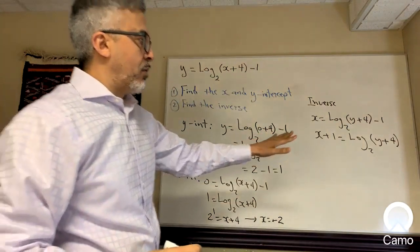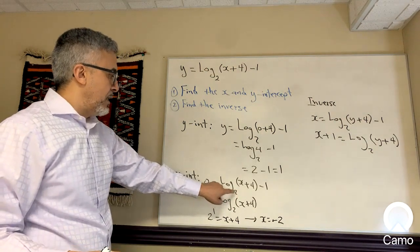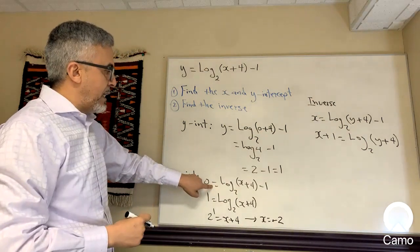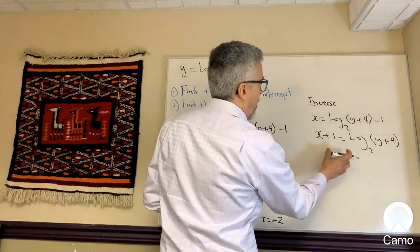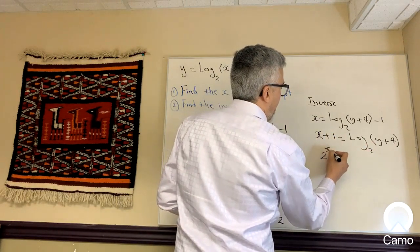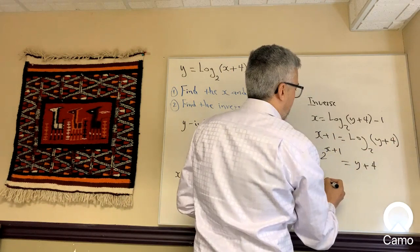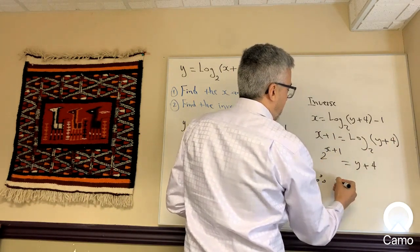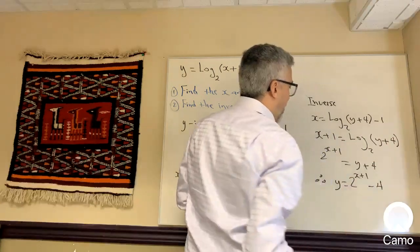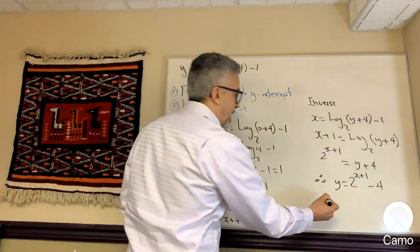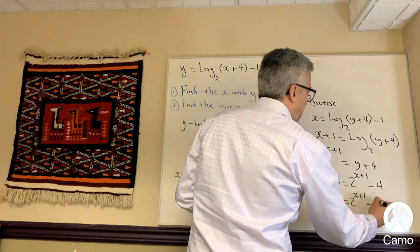To change from logarithmic to exponential form, the base of the log becomes the base of the exponential. So 2 to the power of whatever is on the other side of the equal sign: 2 to the power of (x plus 1) equals y plus 4. Move the 4 to the other side, so y equals 2 to the power of (x plus 1) minus 4. We represent the inverse as f inverse of x equals 2 to the (x plus 1) minus 4.